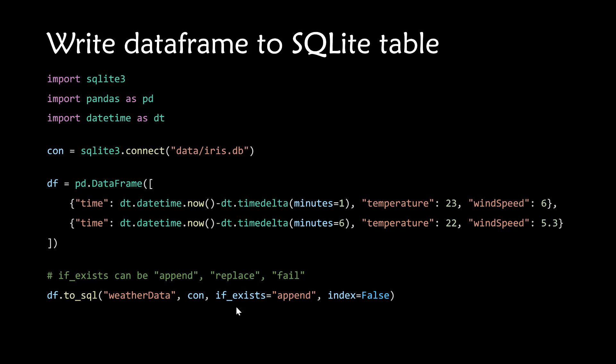There is one more important option called `if_exists`. If you write `if_exists='append'`, the DataFrame rows are appended to the table. If you write `if_exists='replace'`, all existing table rows are replaced with the new DataFrame data. And `if_exists='fail'` means an error is thrown if the table already exists. For example, if you are doing an IoT project and inserting sensor data into a table, you don't want to replace the table every time — you want to append rows, so you would use `if_exists='append'`.